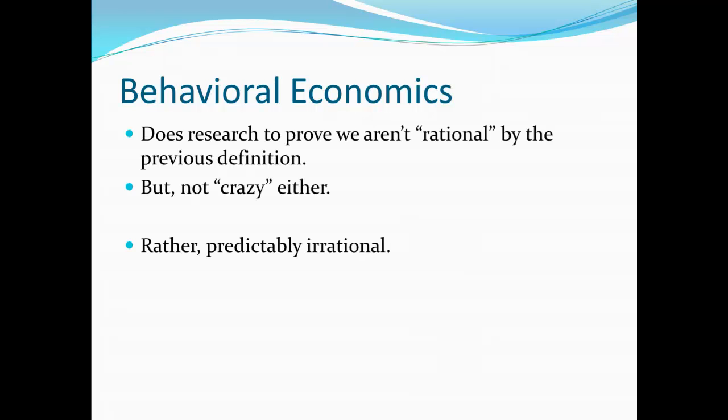Behavioral economics does research to prove that we aren't rational by that standard definition. But at the same time, we're not crazy — people aren't totally unpredictable. Instead, people fall into very clear, very predictable patterns of behavior. So we'd say that people are not rational, but they are predictably irrational — they fall outside the mainstream notion of rationality. People, for example, don't have stable preferences; their preferences might be affected by very odd things. People might actually be charitable or perhaps spiteful, but we do so in a very predictable way that isn't particularly shocking.